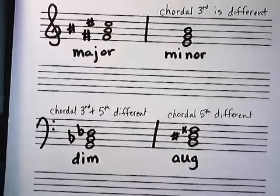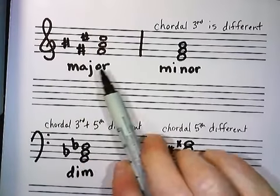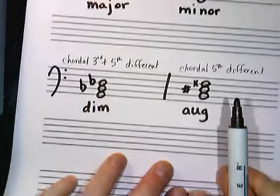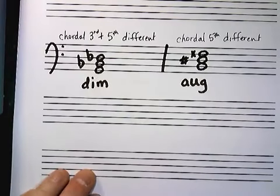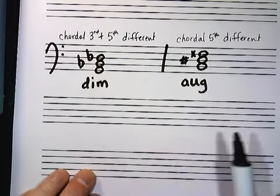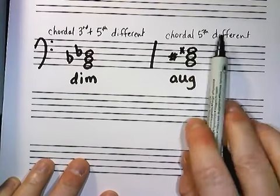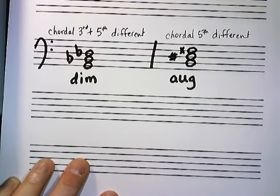Okay. So, that's pretty easy then. If it all matches, it's major. If the middle note's different, it's minor. If the middle note and the top note are different, it's diminished. And then finally, if only the top note is different, it's augmented.